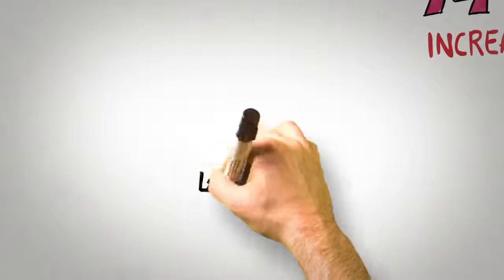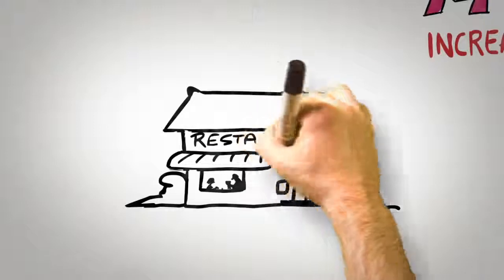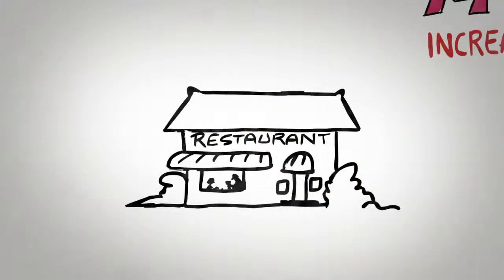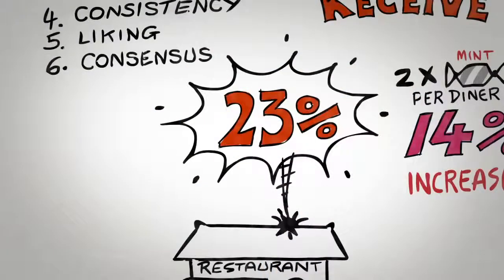But perhaps most interestingly of all is the fact that if the waiter provides one mint, starts to walk away from the table, but pauses, turns back, and says, for you nice people, here's an extra mint, tips go through the roof. A 23% increase, influenced not by what was given, but how it was given.